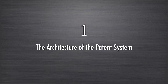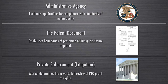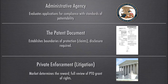The basic setup of the patent system involves a major administrative agency, the U.S. Patent and Trademark Office, which also handles trademarks. For our purposes here, we're talking about the patent side. Their job is to evaluate patent applications for compliance with standards of patentability. If you want to get a patent in the United States, you have to apply to the USPTO.